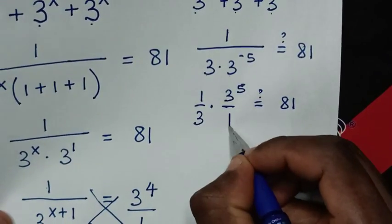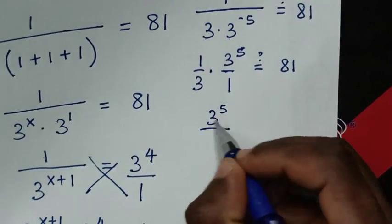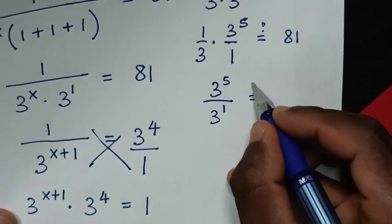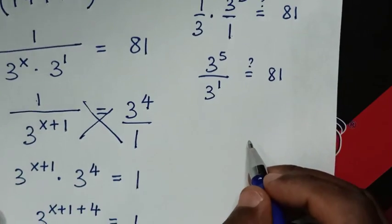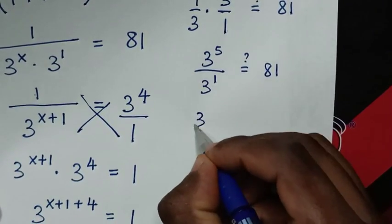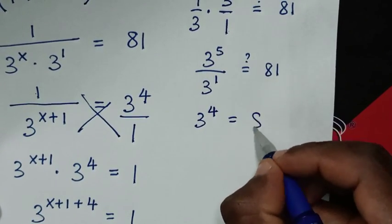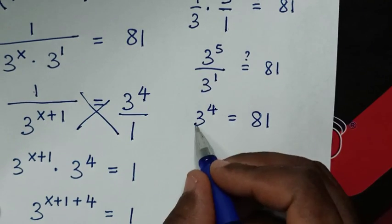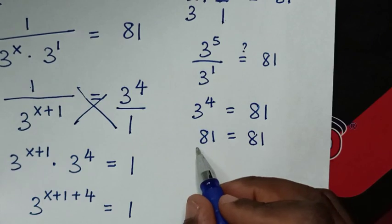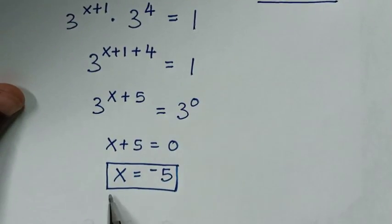So this is the same as 3^5 over 3, which is the same as 3^5 over 3^1. Is it equal to 81? Using division of exponents with the same base of 3, it will be 3^(5 minus 1) = 3^4, which equals 81. Now, 3^4 is 81, and 81 equals 81. Because the left side and right side are equal, it is confirmed true that x is equal to negative 5.